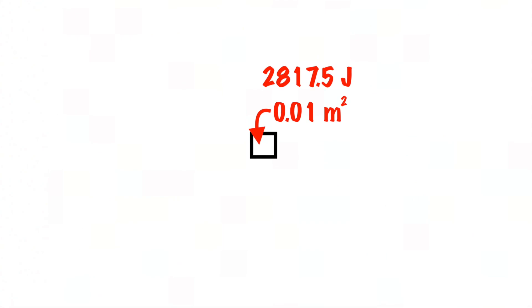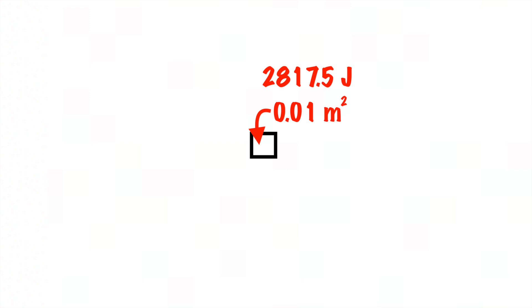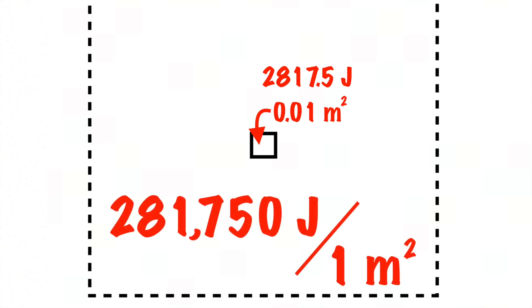So if the goal is to hit 100 square centimeters with 2800 joules of energy, we are going to need to produce a sound with an intensity of 281,000 joules per square meter.